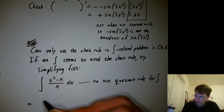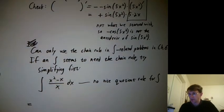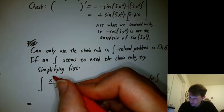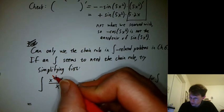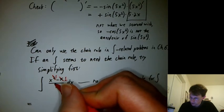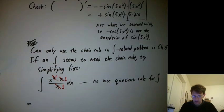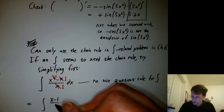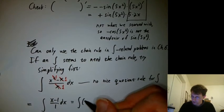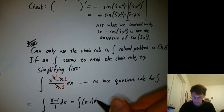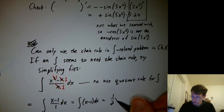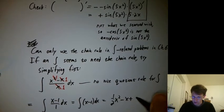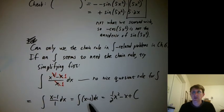But what you could do is simplify because you could say let's cross out the 2 and write a 1, cross out the x and write a 1, cross out the x and write a 1. And so you could get the integral of x minus 1 over 1 dx, which is the integral of x minus 1. Which is 1 half x squared minus x plus C. So we're just taking the integral of x minus 1.